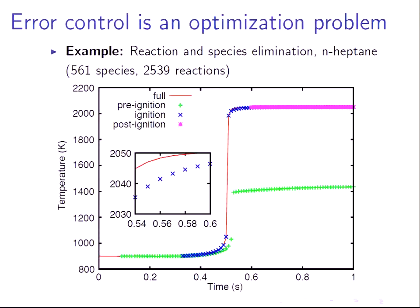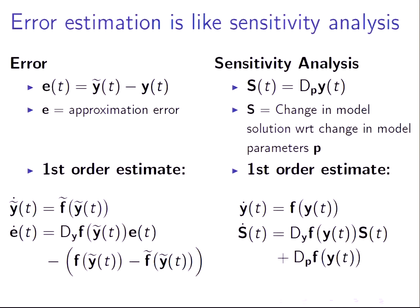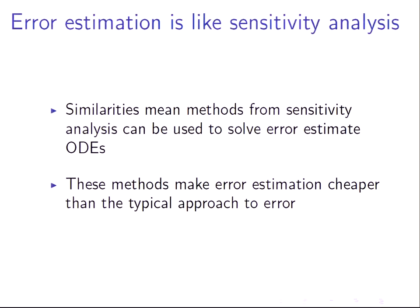The error estimation is a lot like sensitivity analysis. Error is the reduced model solution minus the detailed model solution — and we're assuming you don't have that detailed solution. What you can do is perform a first-order Taylor series expansion to get an estimate of that error. In sensitivity analysis it's the same sort of thing: you have a change in your model solution with respect to some parameters, and you want an estimate of how it changes without solving at the new parameters. These two sets of equations are very similar — both involve dependent variables with a Jacobian pre-multiplying them and some forcing term — meaning you can use the same methods from sensitivity analysis to solve the error estimation ODEs, leveraging well-known algorithms.